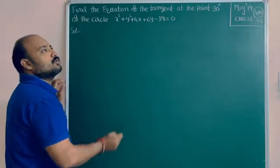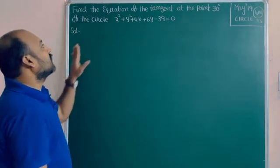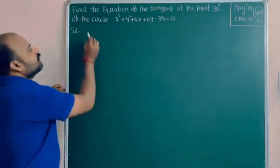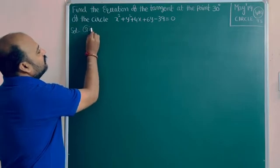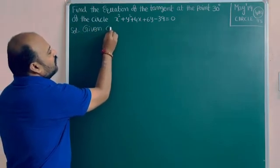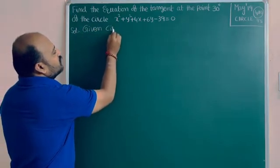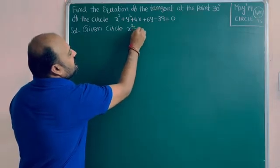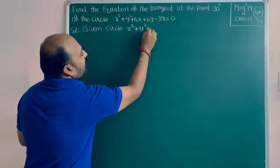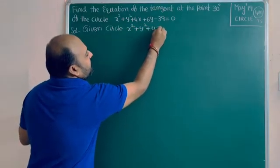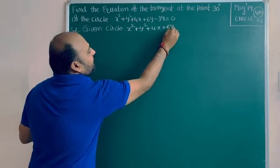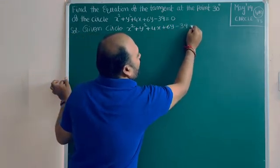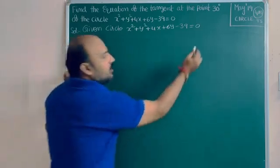Now come to the question. Write it first: given equation of circle — x² + y² + 4x + 6y - 39 = 0. Label this as equation number one.